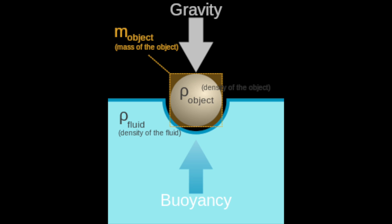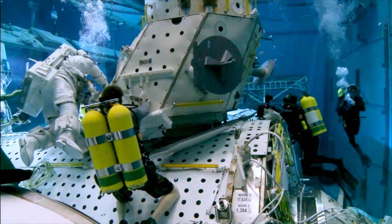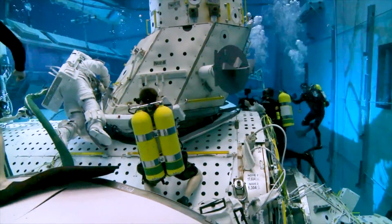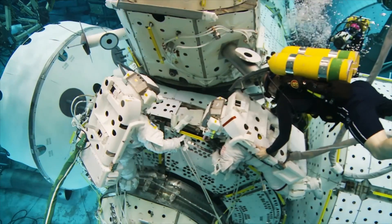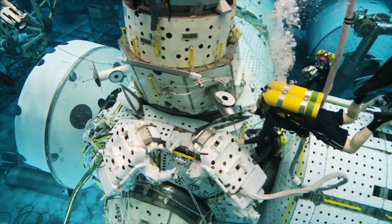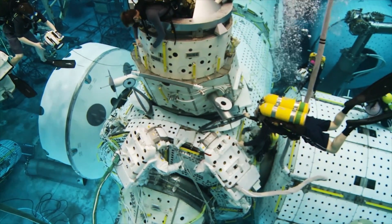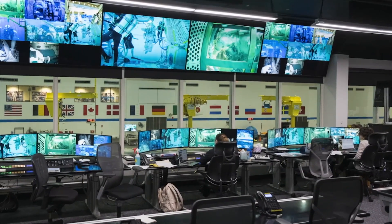Neutral buoyancy happens when an object's average density is equal to the density of the fluid it's immersed in, resulting in a buoyant force that perfectly balances the force of gravity. Neutral buoyancy facilities make use of this effect to simulate the weightlessness of space. They're typically very large, very deep pools where astronauts can train for spacewalks and other extravehicular activities in a controlled environment. The pools are filled with water and astronauts wear specialized suits that make them neutrally buoyant, mimicking microgravity conditions — right where they practice tasks like equipment handling, repairs, and construction.